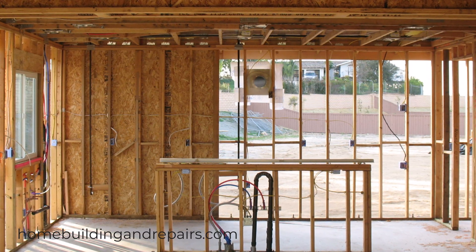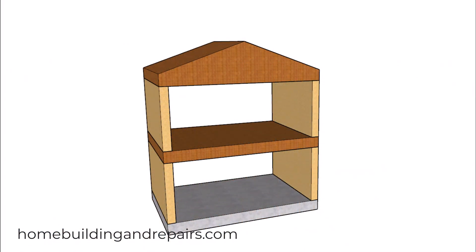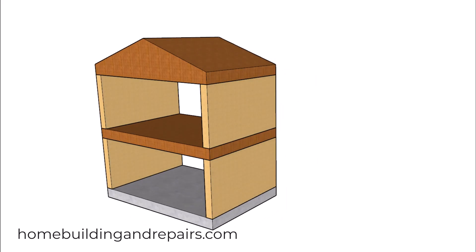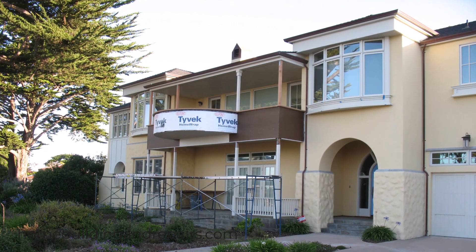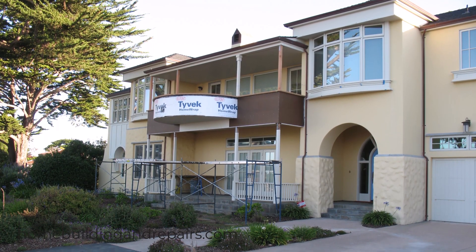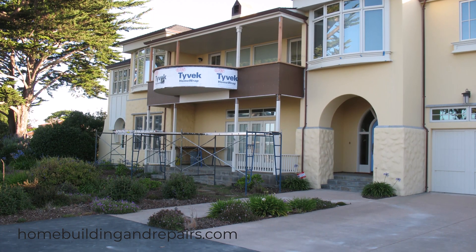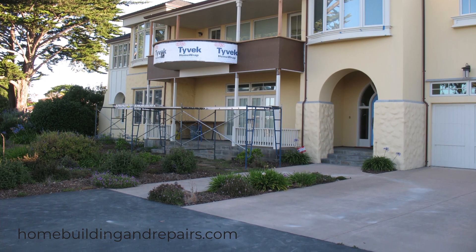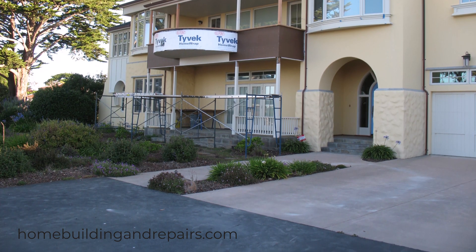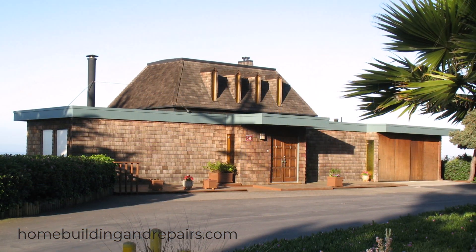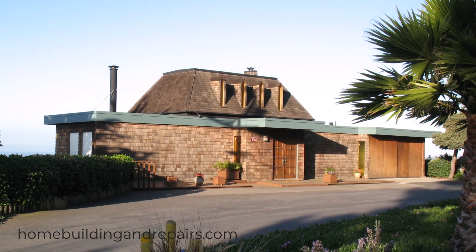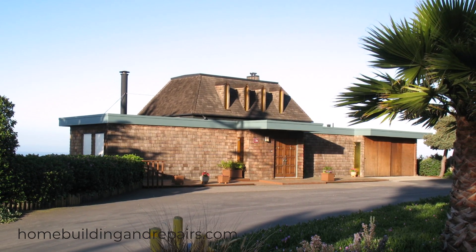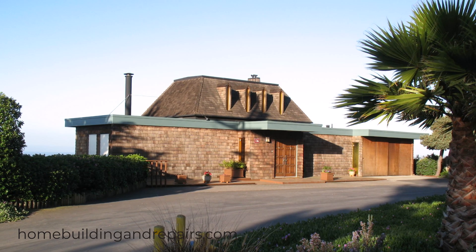Starting with number one: dead loads. These are the static permanent forces exerted by the weight of the building's own materials. This would include the weight of the roofing, sheathing, rafters, trusses, joists, studs, drywall, siding, and all of the other permanent structural and finishing components. The weight of these loads are usually constant and relatively predictable.